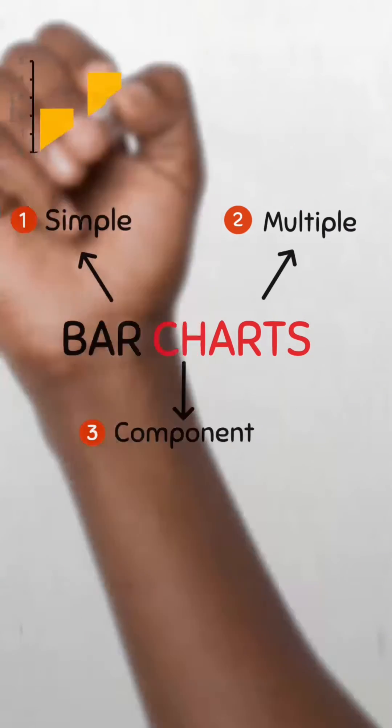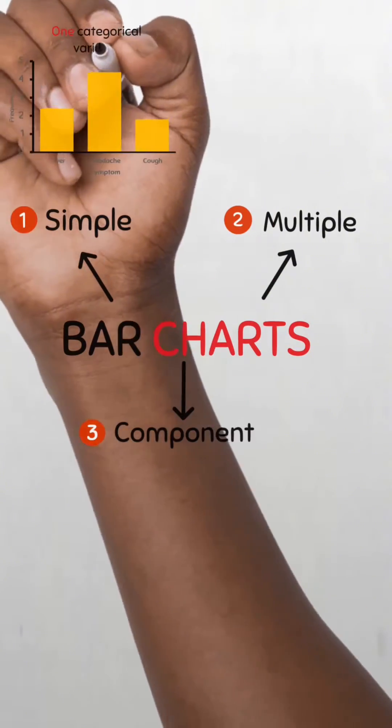In a simple bar chart, the bars represent the whole of the magnitude of a single categorical variable.